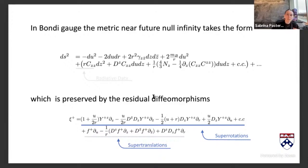Some people might add a z-bar-dependent Y if they were trying to be too general. Question: 'Is Y-plus a vector field that's holomorphic, a function of z?' — Yes, and if you take the Lie derivative of the metric, you just transform the fields C and N. You'll transform C here, and the angular momentum aspect should stay the same. The modes of the falloff will change — you map the solution space to itself.